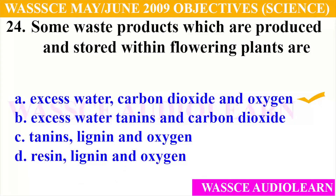Question 24: Some waste products which are produced and stored within flowering plants are — A. Excess water, carbon dioxide, and oxygen, B. Excess water, tannins, and carbon dioxide, C. Tannins, lignin, and oxygen, D. Resin, lignin, and oxygen. And the answer is A, excess water, carbon dioxide, and oxygen.